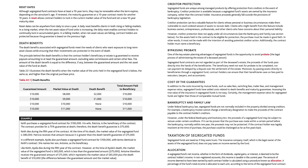In a different example, Ida also purchases a segregated fund contract for $100,000 with terms identical to Keith's contract. She names her son Antoine as the beneficiary. Like Keith, Ida dies during the fifth year of the contract. However, at the time of Ida's death, the market value of the segregated fund is $65,000, which is less than the guaranteed amount of $75,000. Antoine therefore receives the guaranteed amount of $75,000, which represents the market value of $65,000 plus the death benefit of $10,000 — the difference between the guaranteed amount and the market value.